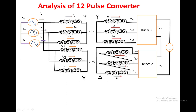This is the AC supply and this is the DC side. The DC side we are representing with a constant current source. This is converter 1 and this is converter 2. The primary side of the converters are connected in parallel and the secondary side of the converters are connected in series. The first converter gets power from the star-to-star transformer and the second converter gets power from the star-to-delta transformer.